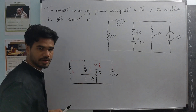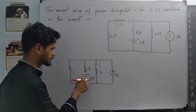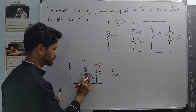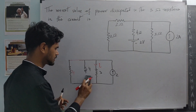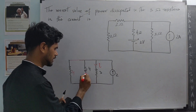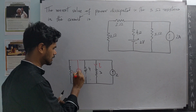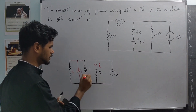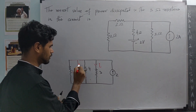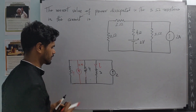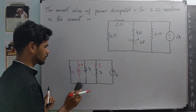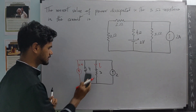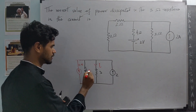Because we want current, we want to replace this chunk with its Norton's equivalent. So I am going to remove this voltage source and add a current source. The current is given by 2 by 4, which is 0.5. Then we have a 4 and a 4, so I am going to replace this resistance and modify this to 2.